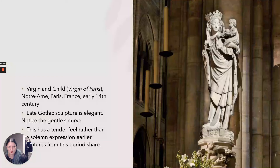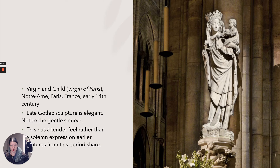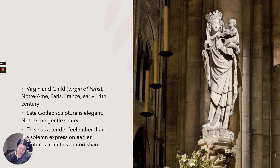This is the Virgin of Paris from the 14th century — quite famous. Notice in her body how she has this S-curve. You can also see this sculpture on Île de la Cité near Saint-Chapelle or Notre Dame — it's right in front of Notre Dame. Look at her face: we have a more tender, humanized expression. This gentle S-curve to her body is really looking forward into the Renaissance, where we see works like Botticelli's soft, feminine faces with gentle S-curves, still with attention to the realism of the drapery.